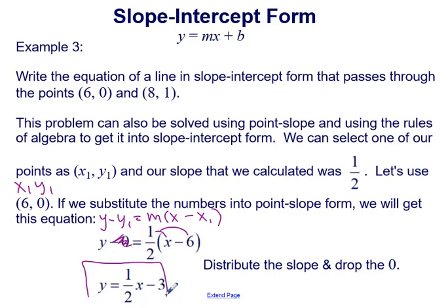Either way is fine — you don't have to do both when solving the problem. It's just a matter of which you prefer: going straight to slope-intercept form and solving for b, or going to point-slope and then converting to slope-intercept.